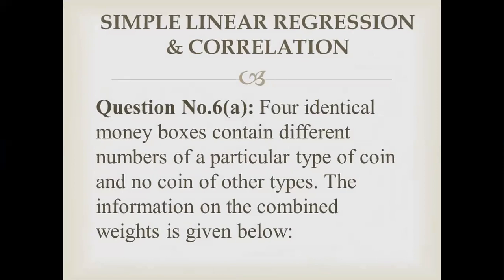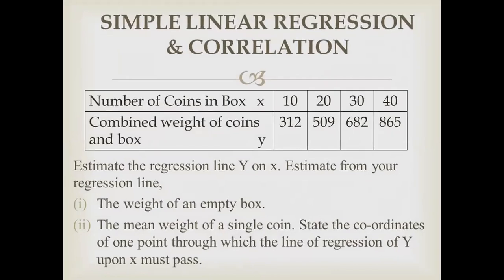Four identical money boxes contain different numbers of a particular type of coin and no coin of other types. The information on the combined weights is given. We have given information: number of coins in box x, combined weight of coins and box y. We have to denote this.